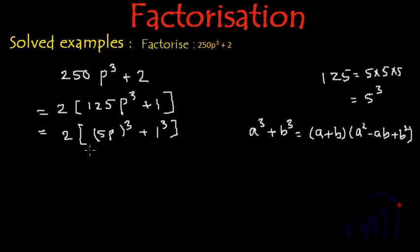If I put a = 5p and b = 1, we can rewrite this expression as 2(a + b), which will be 2(5p + 1).